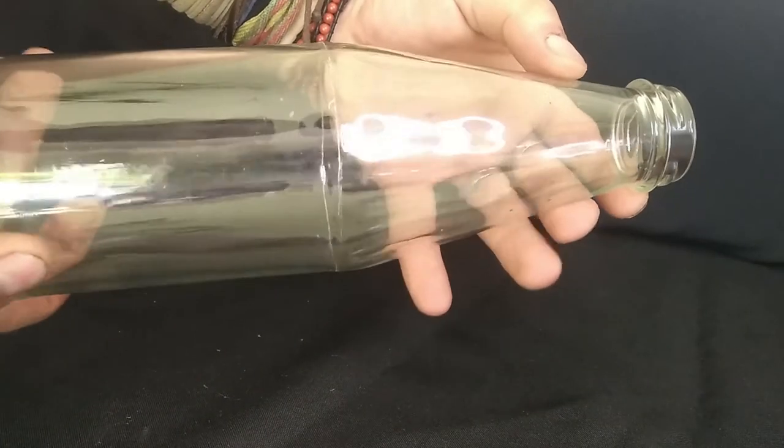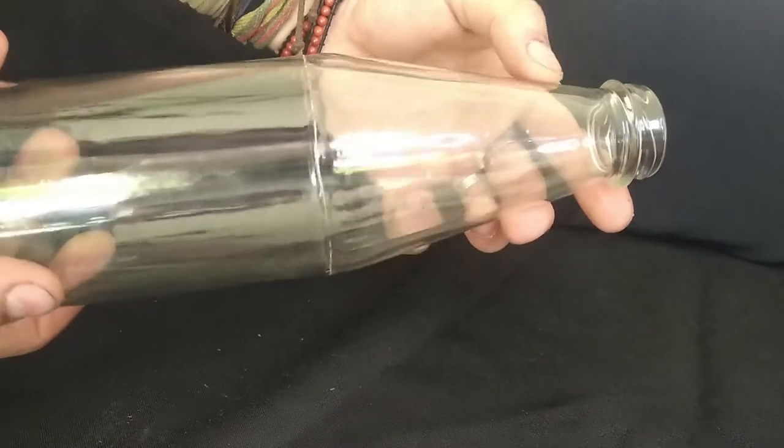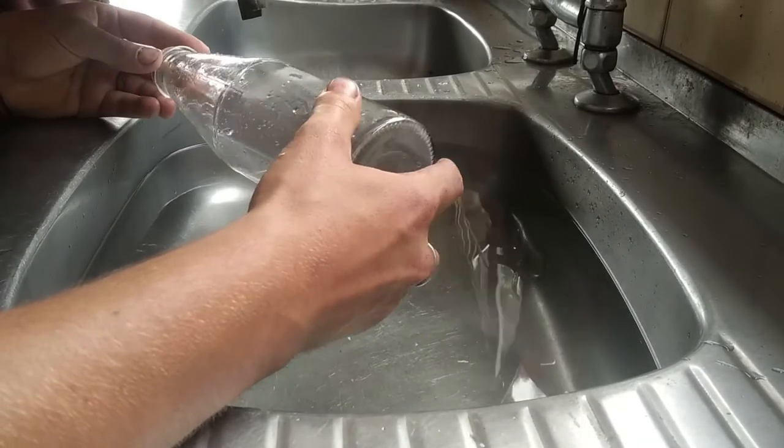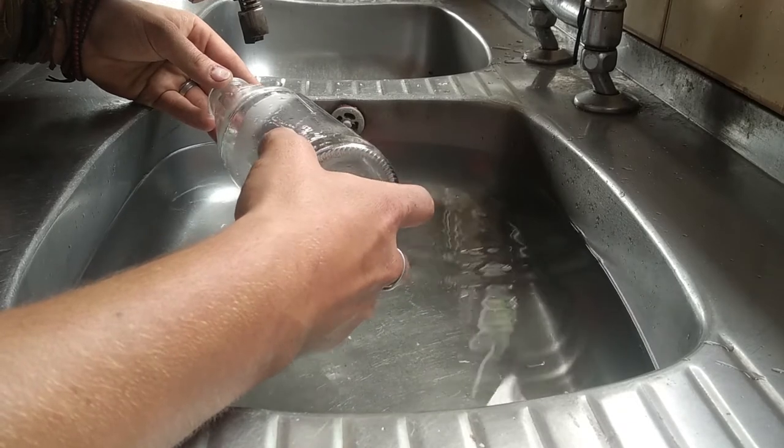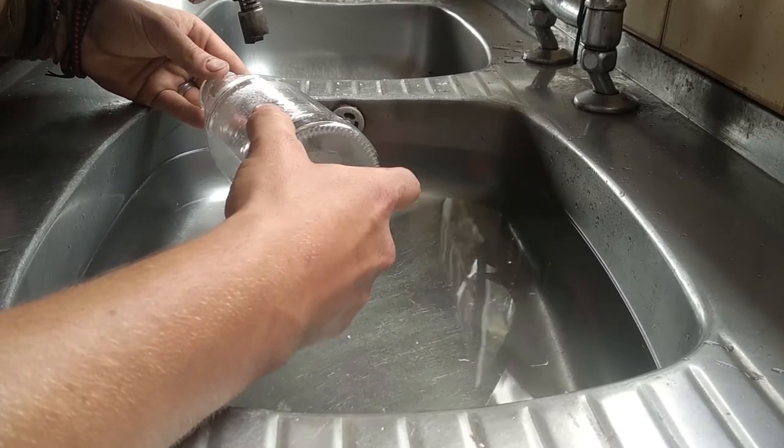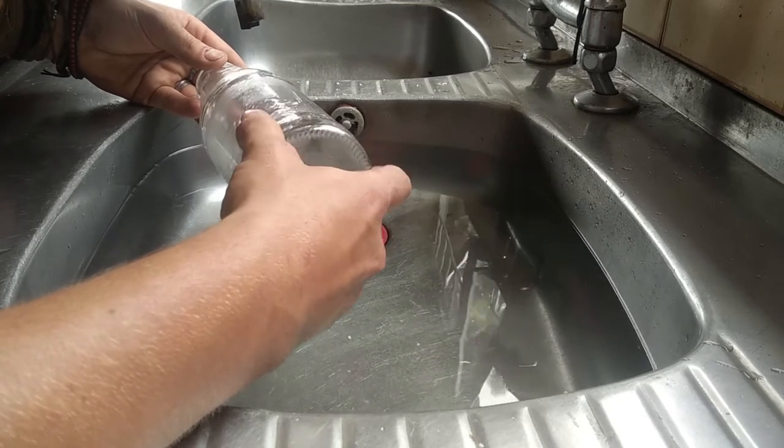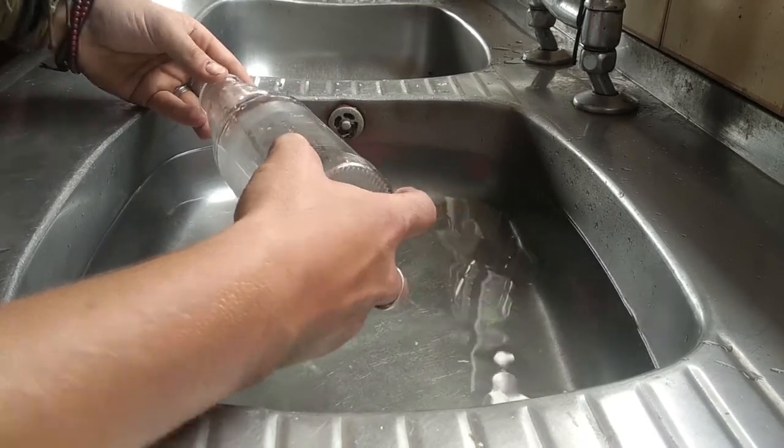The next step was to crack the bottle on the score line and hopefully get a clean break. Here we used a handheld gas torch and some water. By heating the score line evenly and then quickly submerging it in the cold water, the sudden temperature change causes the bottle to crack on the score line.